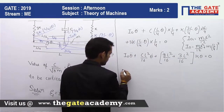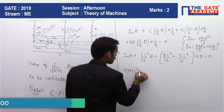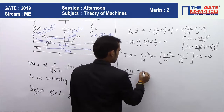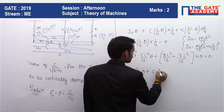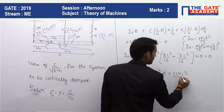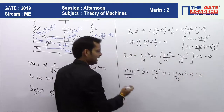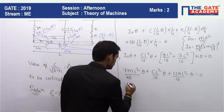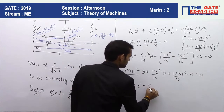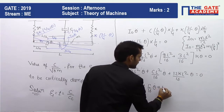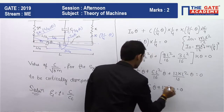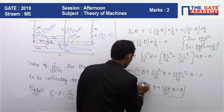Substituting I_O = 7mL²/48 into the equation of motion: (7mL²/48)θ̈ + (CL²/16)θ̇ + (12kL²/16)θ = 0. Cancelling L² throughout: (7m/48)θ̈ + (C/16)θ̇ + (12k/16)θ = 0. This is the equation of motion for the given system.